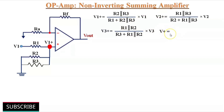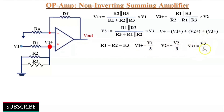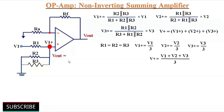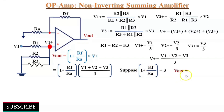So V+ equals V1+ plus V2+ plus V3+. As the number of input voltages increases, the complexity also increases. To reduce this complexity, let's assume R1, R2 and R3 are equal. The equations simplify to V1+ = V1/3, V2+ = V2/3, V3+ = V3/3, and V+ = (V1 + V2 + V3)/3. Then Vout = (1 + Rf/Ra) × (V1 + V2 + V3)/3. If the value of (1 + Rf/Ra) equals 3, then Vout equals V1 plus V2 plus V3.